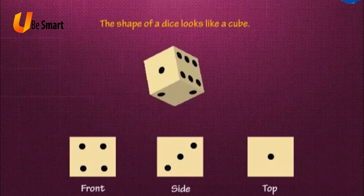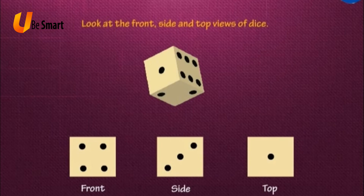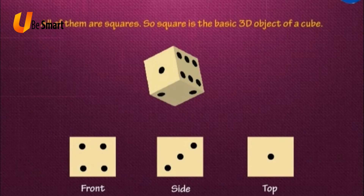The shape of a dice looks like a cube. Look at the front, side and top views of dice. Do you find any similarity? All of them are squares. So, square is the basic 3D object of a cube.